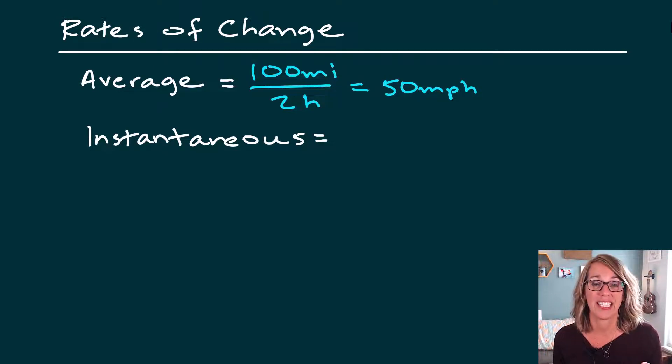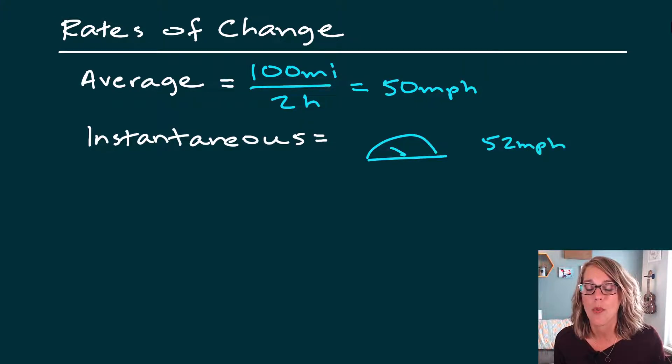Now if I wanted to find the instantaneous rate of change, all I need to do is to look down at my speedometer, or maybe your speedometer has a number on it, and I can see that at any given point in time, at an instant, I can look and see that that speed is equal to say 52 miles per hour.